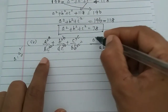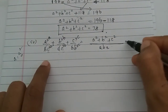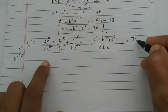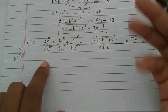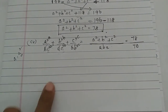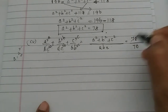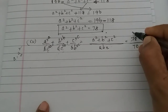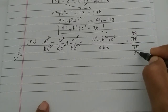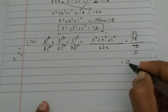This simplifies to (a² + b² + c²) / ABC, since multiplying each term by ABC gives a² + b² + c² in the numerator. So the value is 78 over 70, which simplifies to 39/35.